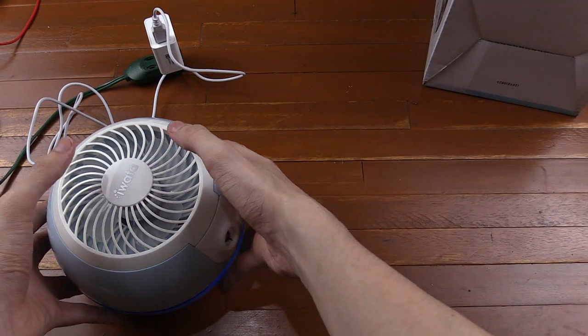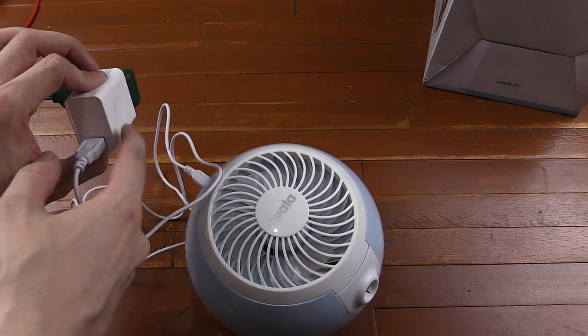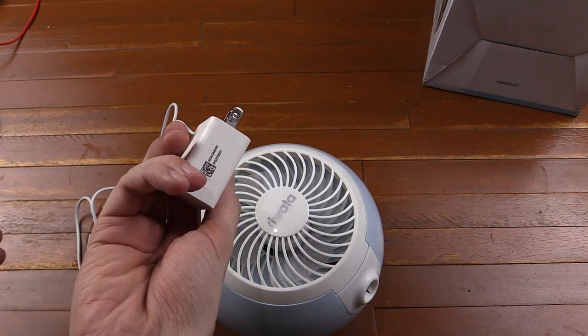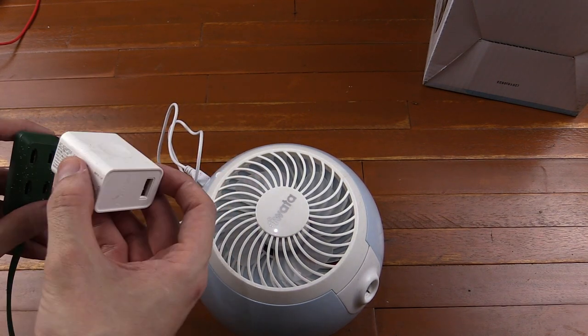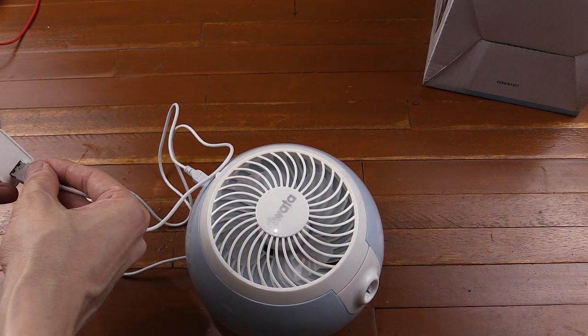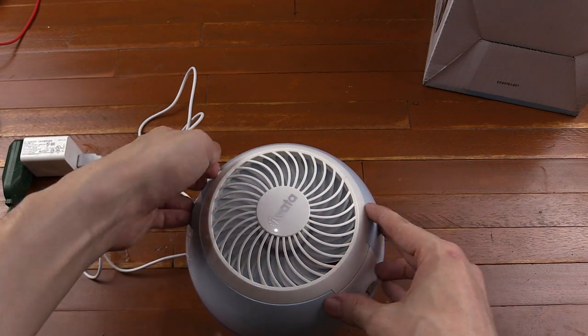Inside the box you get the unit itself and a pretty long USB cable, but you don't get the power brick to charge it from. This is from a cell phone, and you can use any cell phone charger to do this basically, because this only consumes 2.5 watts, so it's very low power, and you can just run it straight from there. So if I turn on the fan, like that.